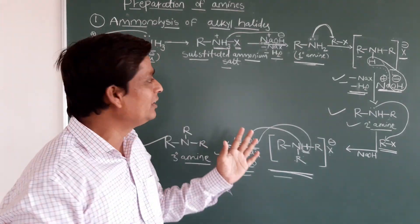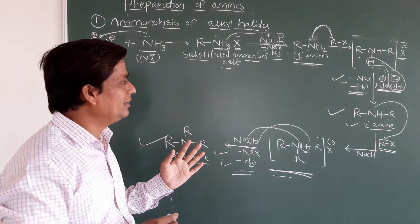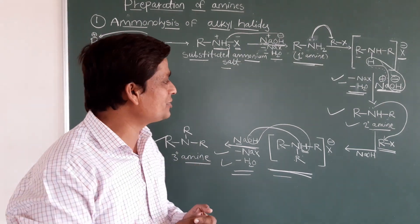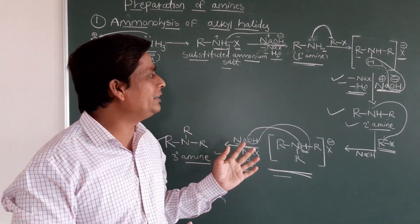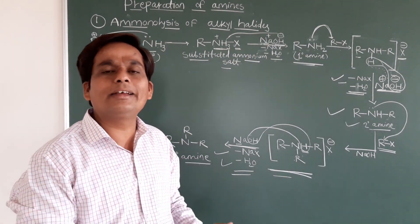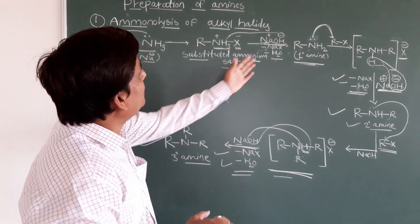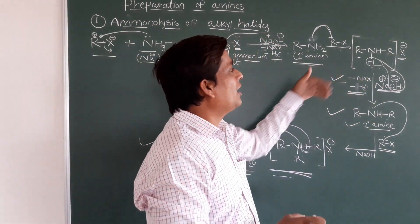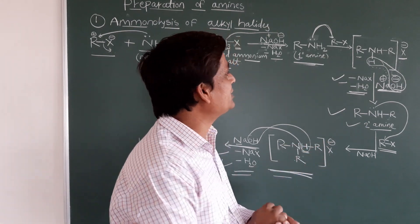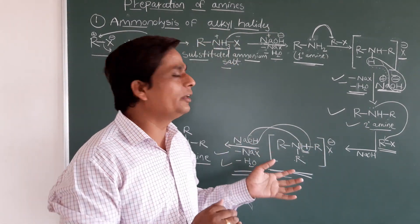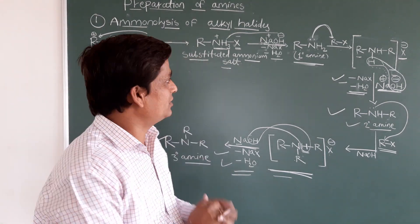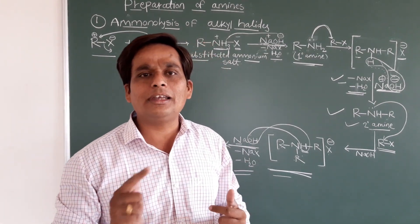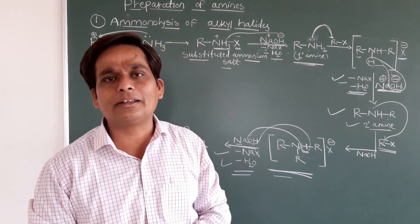This is the ammonolysis process. We use the ammonia molecule and get primary, secondary, and tertiary amines. However, the disadvantage is that the products are not in pure form — all primary, secondary, and tertiary amines are mixed together. If you want only the secondary or tertiary amine, you must separate them by some chemical process. So in the next class we will discuss another method to prepare amines.